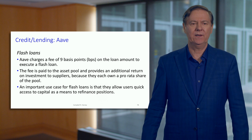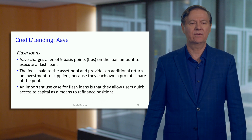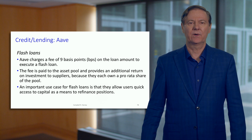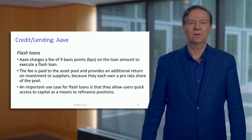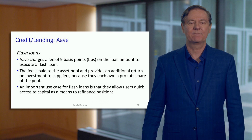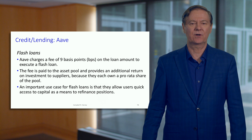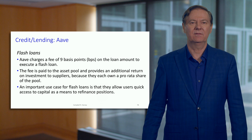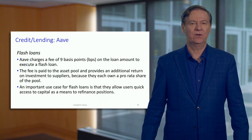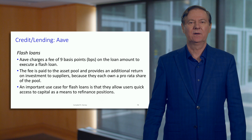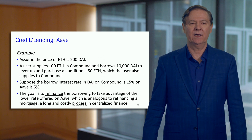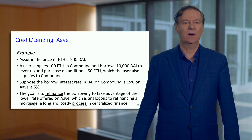Where does this fee go? The fee goes to an asset pool and provides additional returns to the suppliers. It's not dividended out — it just goes in as an extra rate of return. The flash loan is very useful in giving users the ability to access capital very quickly to do what they need to do, whether that's an arbitrage trade or a refinancing. Let's go through some examples.